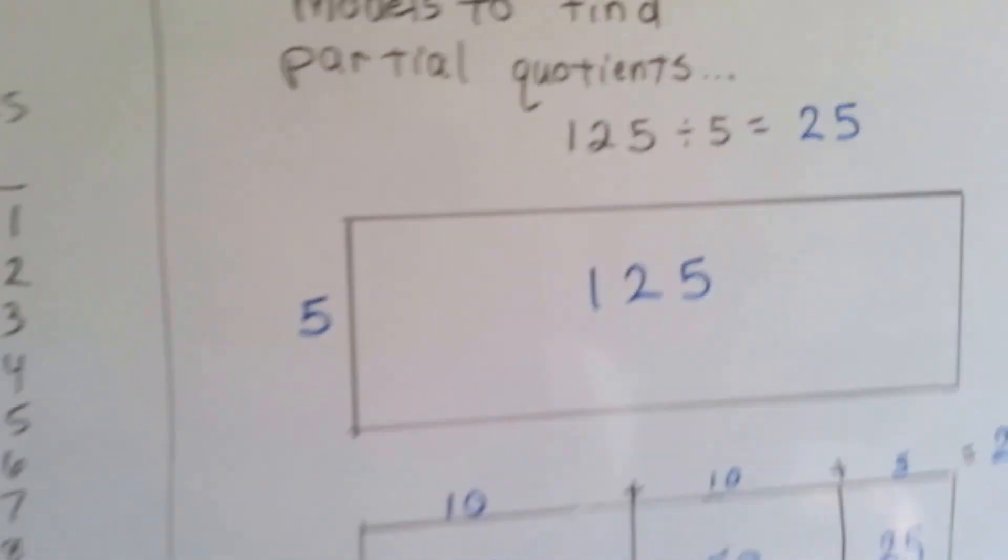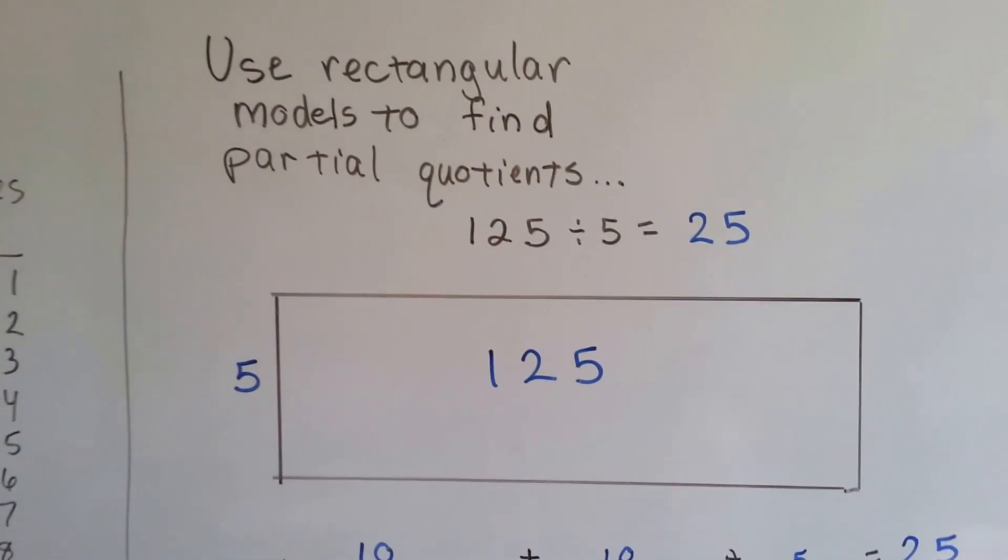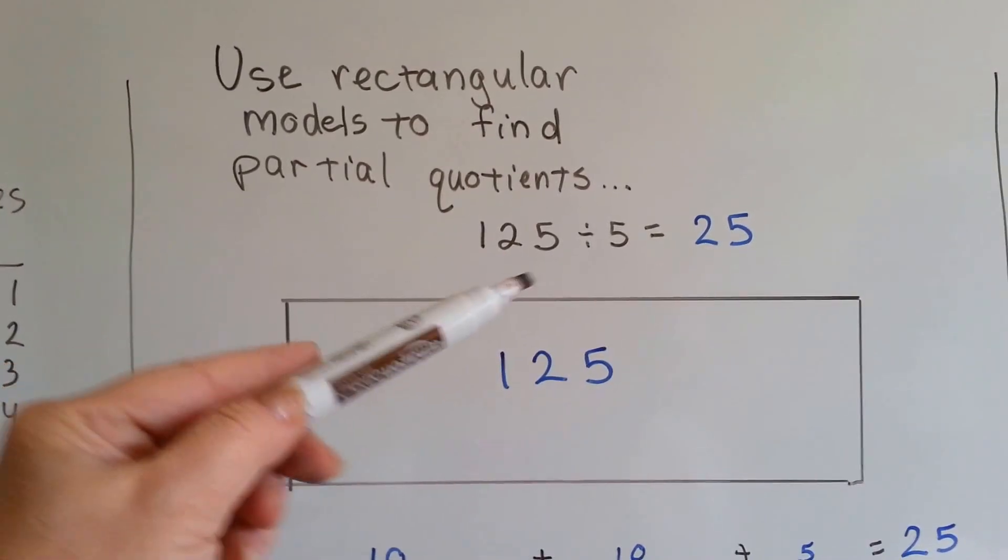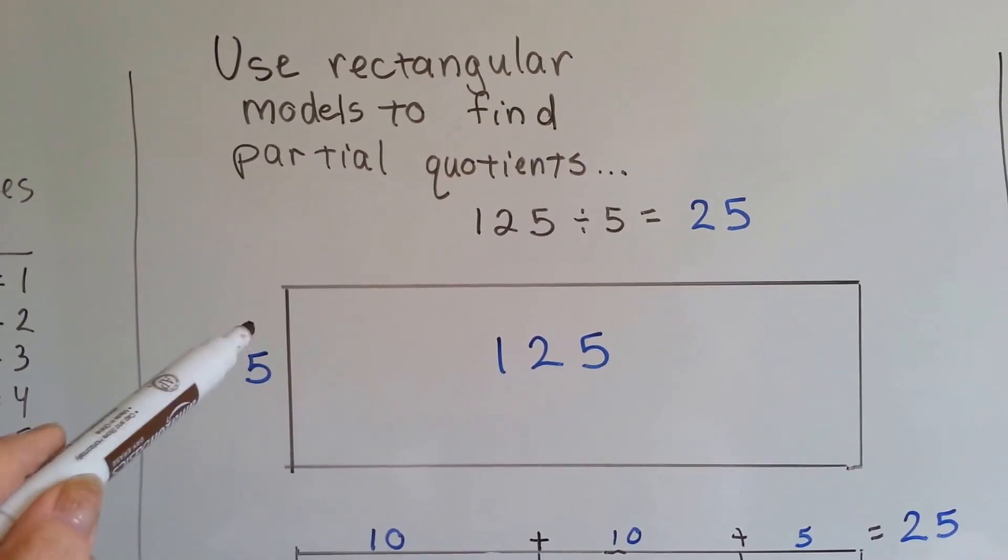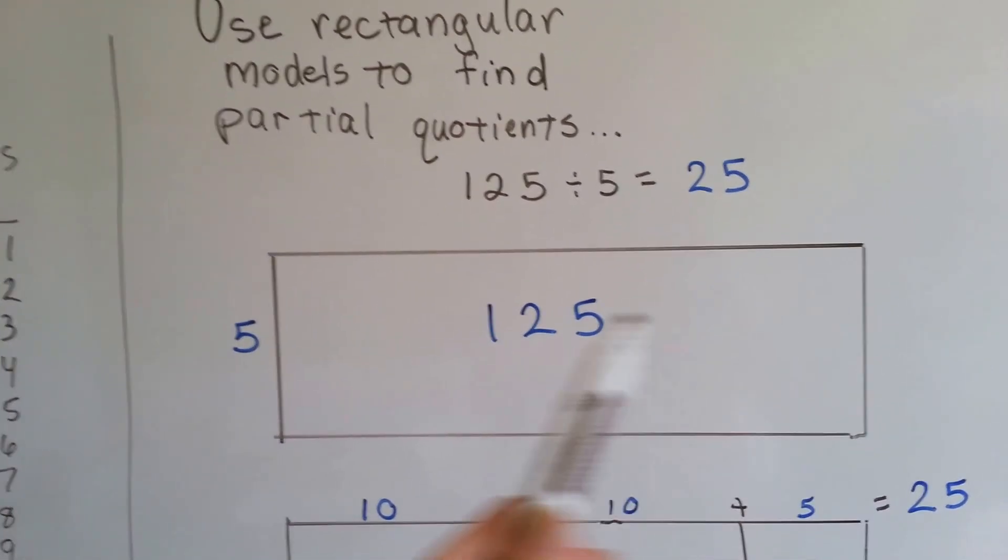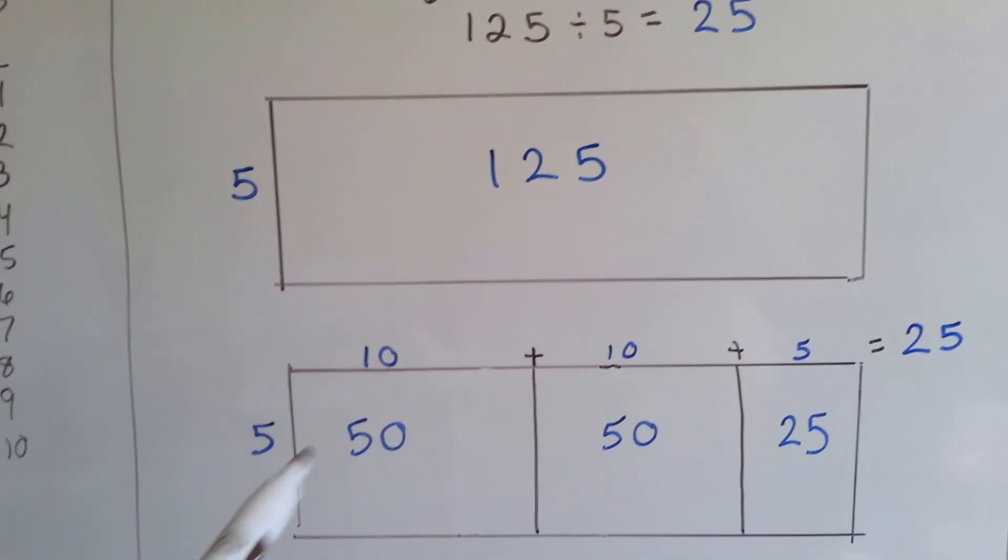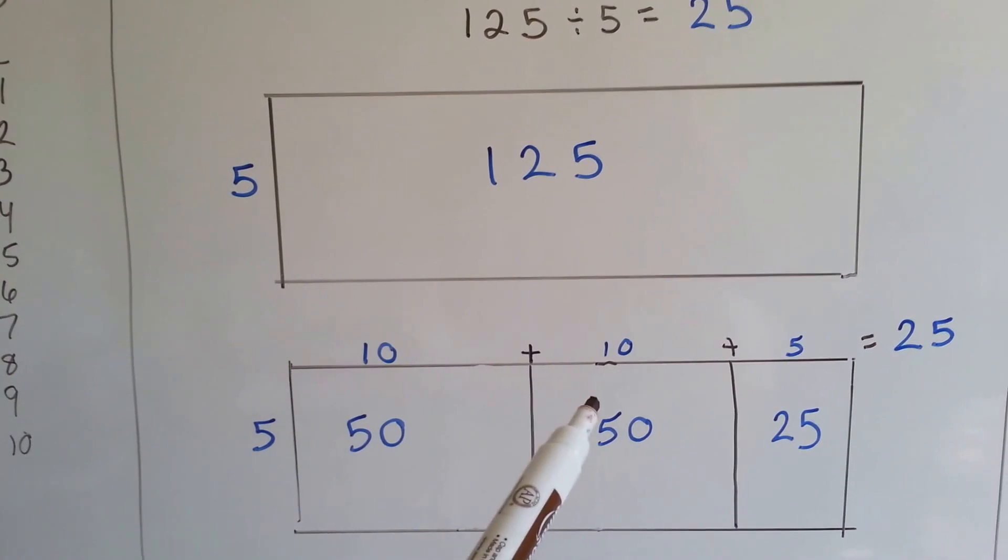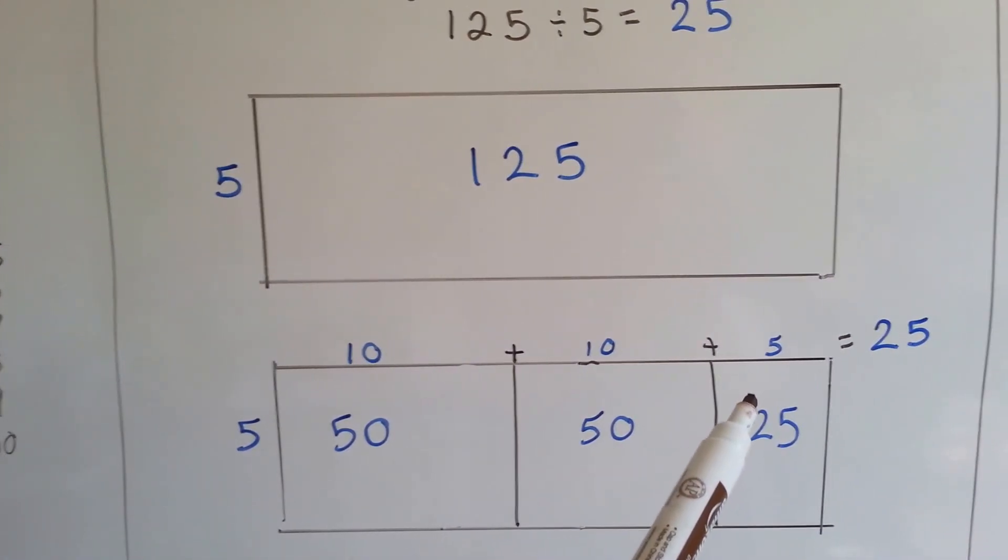All right? We can also use rectangular models to find partial quotients. If we had 125 divided by 5, we'd have 5 this way and 125 going this way. And we could split it up into 5 times 10 and 5 times 10 and 5 times 5.